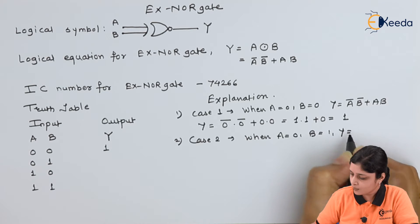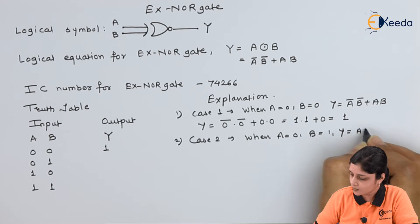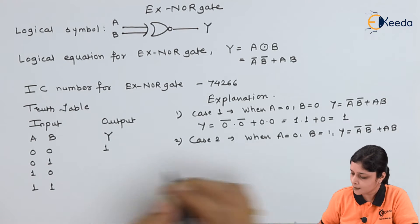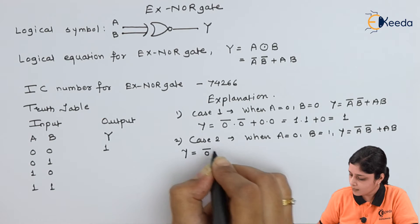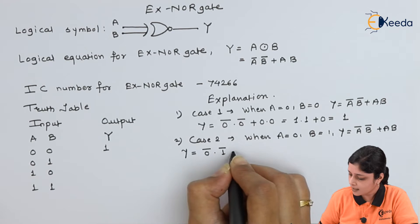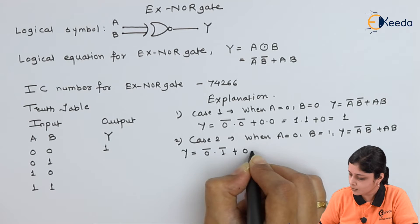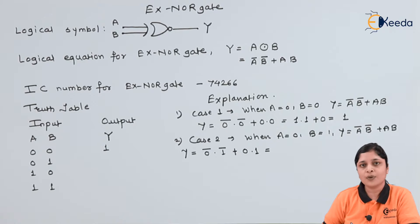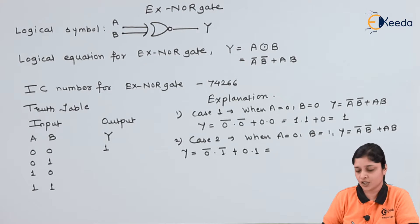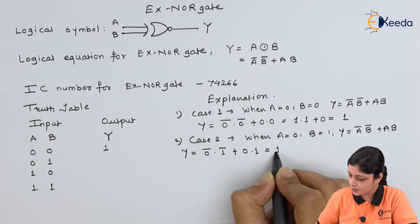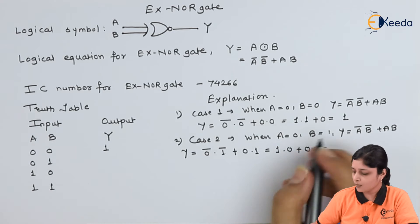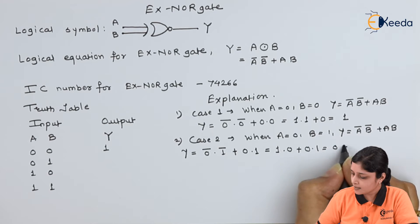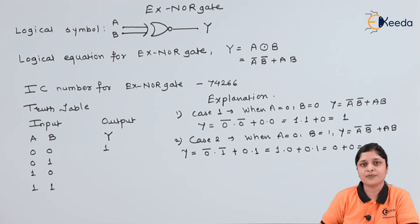For Case 2, when A equals 0 and B equals 1, Y equals Ā·B̄ + A·B. Substituting: 0̄·1̄ + 0·1. Solving: 0̄ is 1, and 1̄ is 0, so we get 1·0 + 0·1, which gives 0 + 0, so the final answer is Y equals 0.